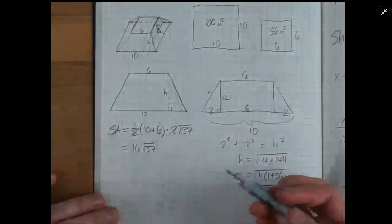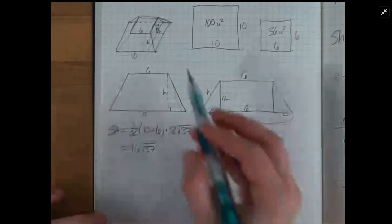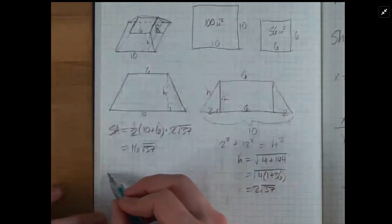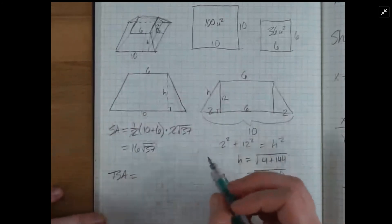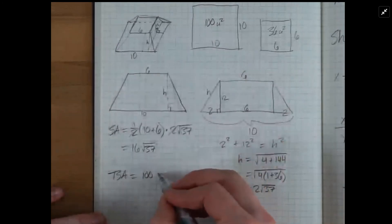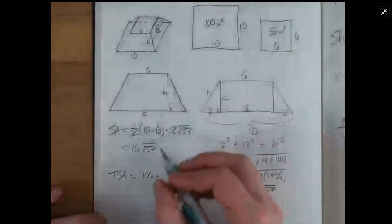Now to get the total surface area of the entire frustum, what the question is asking for, I'll call that TSA. And that's going to be equal to the bottom square, here. So 100 plus the top square, 36,